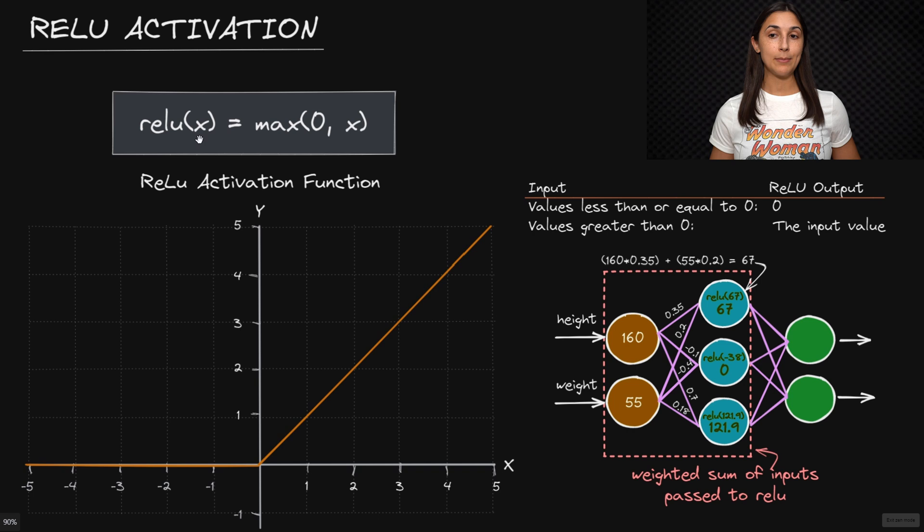When supplied an input x, ReLU will map this input to the maximum value of either the input itself or zero. So in other words, as we can see with ReLU's graph here, when passed a negative value, ReLU will map the negative value to zero. And when passed a positive value, ReLU will map that positive value to the value itself. And of course, when passed zero, then ReLU of zero is of course zero.